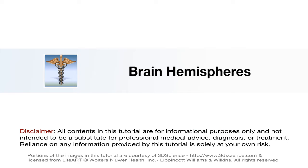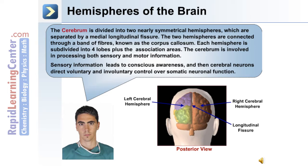The brain is divided into two main hemispheres, a left and a right. The hemispheres of the brain are separated by the longitudinal fissure. The cerebrum is divided into two nearly symmetrical hemispheres, and the two hemispheres are connected through a band of fibers known as the corpus callosum.